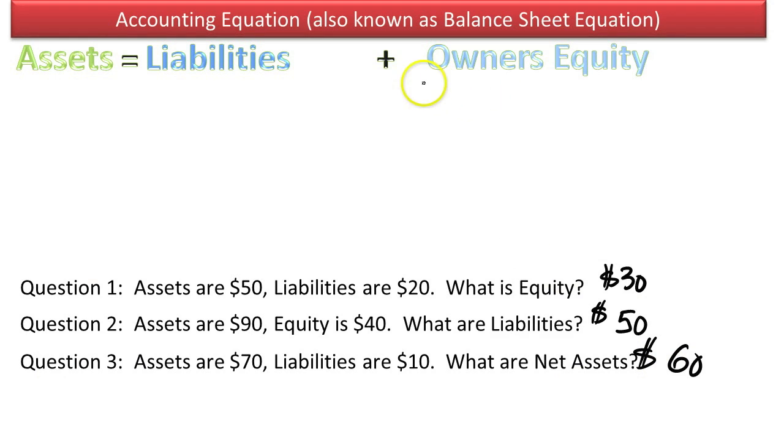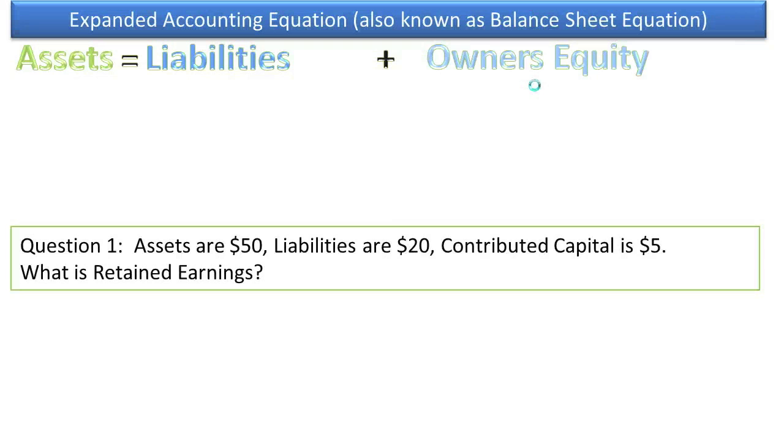What we're going to do now is we're going to break this out into its two sources of equity. You can either contribute equity, or the company can earn equity, and the owners can choose to keep that equity in the business. It's called retained earnings. So, let's get into it.